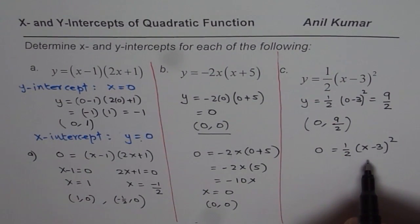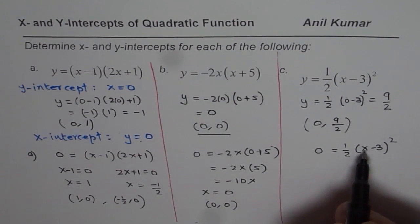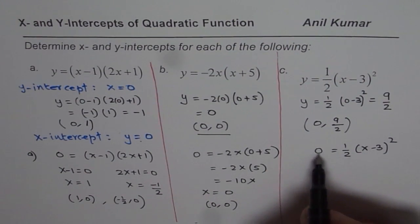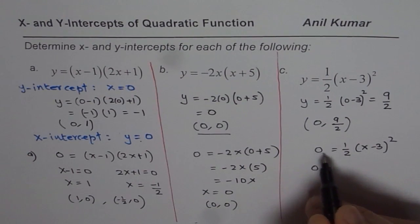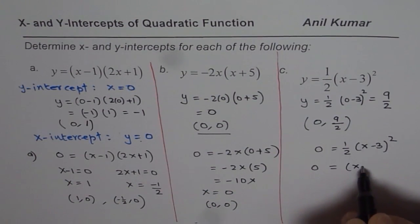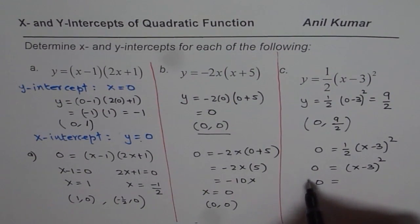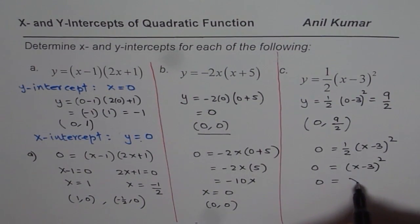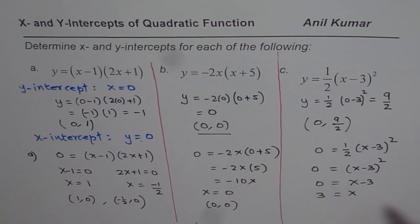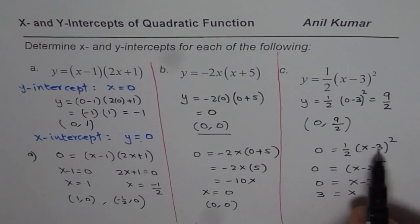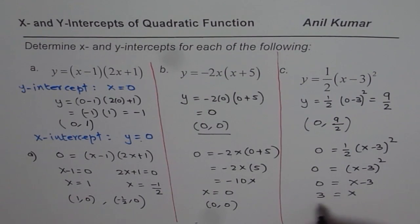Now in this particular case, 0 equals to half of x minus 3 whole square. When I multiply by 2, I get 0 times 2 as 0, equals to x minus 3 whole square. If I square root, even then it is 0, square root of 0 is 0, x minus 3. Now clearly, x equals to 3 is the solution, which I could have got from here itself. This will be 0 when x is equal to 3. So we have only one x-intercept in this case, and that one is at 3, 0.